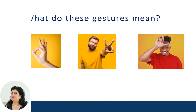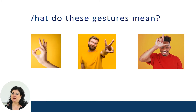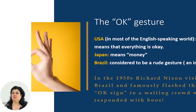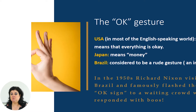Before we proceed to our discussion, look at these interesting gestures and tell yourself – what do these gestures mean? They might be very familiar to you, aren't they? The first gesture is the okay gesture. In the USA and most of the English-speaking world, it means that everything is okay – nice and good. In Japan, it means money. In Brazil, it's considered to be a rude gesture, even an insult.